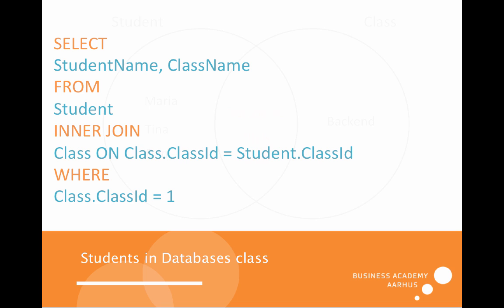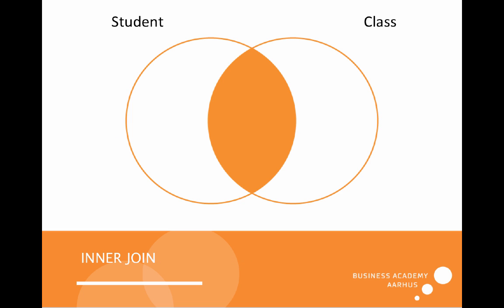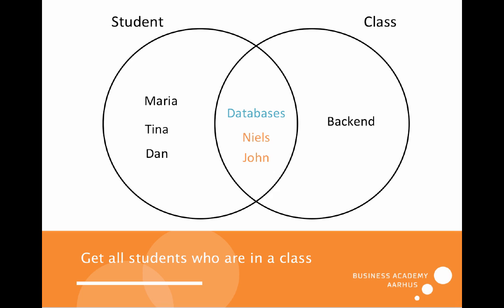Let's look at the SQL to get this common ground out of these two circles. I use SELECT student name and class name — only those two columns — and I get them FROM student. To make the relation I use INNER JOIN on class, relating the class ID from the class table to the class ID on the student. Then I have a WHERE clause at the end specifying that I only need those students and class name for those who are in the Databases class, which is number one. That is the inner join — the common ground between two tables.